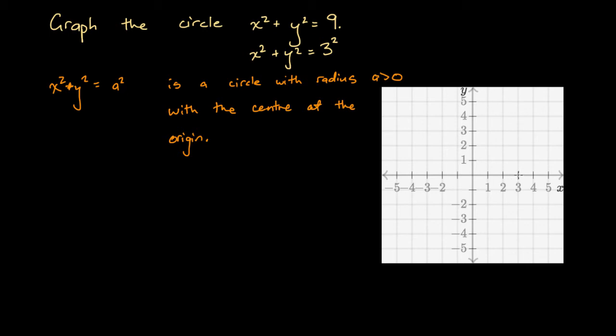So x equals 3, y equals 0. That's 3 units. Here, y equals 3, x equals 0. That's 3 units. This point is 3 units. This point is 3 units. They're all the intercepts with the y and x axis.